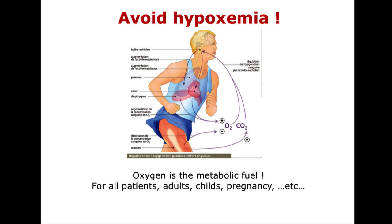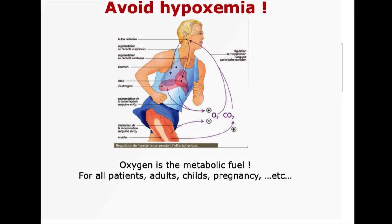We all know that our main goal is to avoid hypoxemia, just because oxygen is the metabolic fuel of the human system. But what clinicians are not totally aware of is that if we should avoid hypoxemia, we should also avoid hyperoxia, just because there are several ways that hyperoxia can be deleterious.